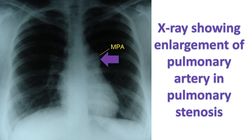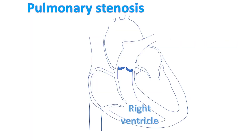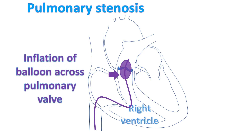Pulmonary stenosis is usually caused by a birth defect. In severe cases, an obstructed pulmonary valve can be opened up by a procedure known as balloon pulmonary valvotomy. In this procedure, a balloon attached to a tube known as a balloon catheter is introduced through a small hole in the groin skin. The balloon is guided across the pulmonary valve using X-ray imaging. When it is across the valve, the balloon is inflated, relieving the obstruction.